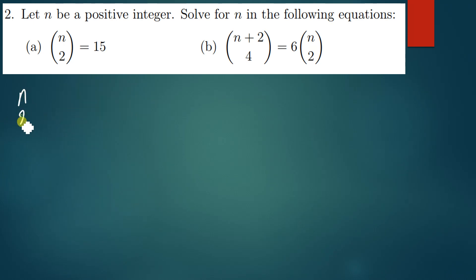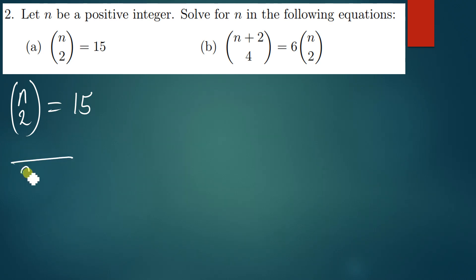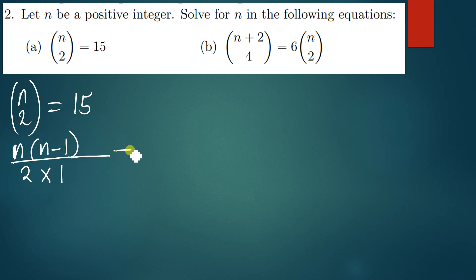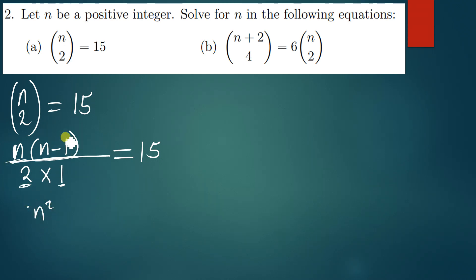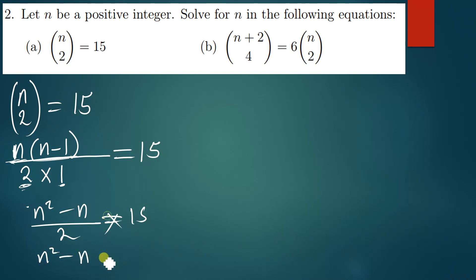Let's use that same method to solve the questions. We have n choose 2 equal to 15. On the left side, I'll start by writing the denominator: 2 factorial, which is 2 times 1. On the numerator, the first number is n and the second number is n minus 1. So we have n times n minus 1 over 2 times 1, equal to 15. Simplifying: n squared minus n over 2 equals 15. Cross multiplying gives n squared minus n equals 30.